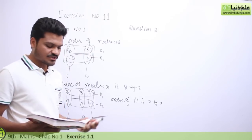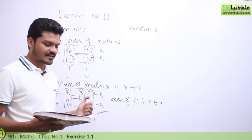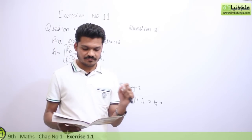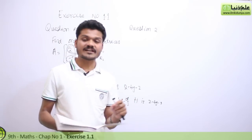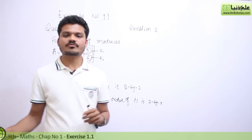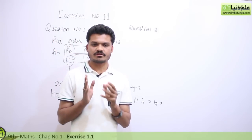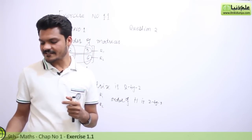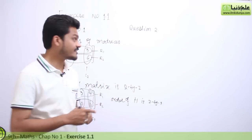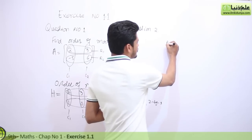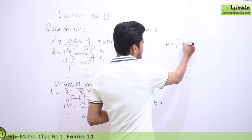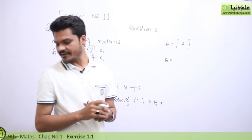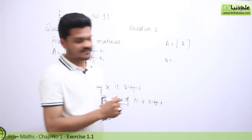Now question number 2 is: which of the following matrices are equal? Two matrices are equal when their order is the same and the corresponding entries are the same. So matrix A has entry 2, and matrix B has entries 3 and 5.